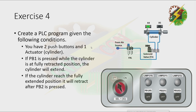Create a PLC program given the following conditions. You have two push buttons and one actuator. If PB1 is pressed while the cylinder is at the fully retracted position, the cylinder will extend. If the cylinder reaches the fully extended position, it will retract after PB2 is pressed. So the requirement to extend is pressing PB1 with the cylinder at fully retracted position, and to retract you press PB2 with the cylinder at fully extended position.